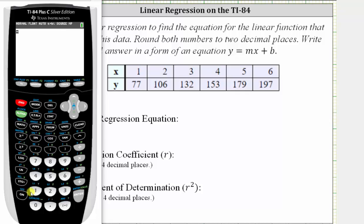We press second zero for the catalog, and we can scroll down from here to diagnostic on, or we can press the D button, which is this button here, which brings us down to the Ds, and then we can scroll down from here.